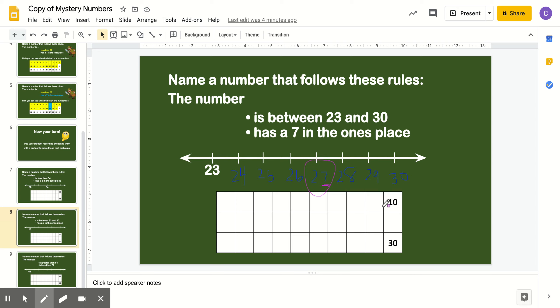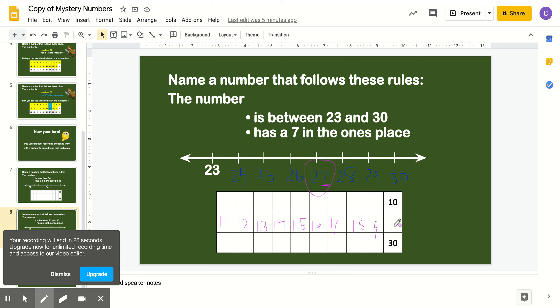Let's use a hundreds chart as well. So let's count from 10, 11, 12, 13, 14, 15, 16, 17, 18, 19, 20, 21, 22, 23, 24, 25, 26, and 27. Okay. And 28 and 29. So it's between 23 and...